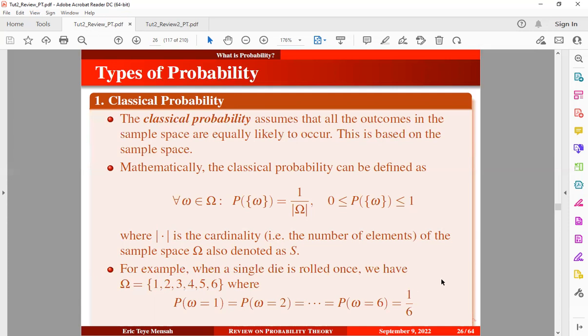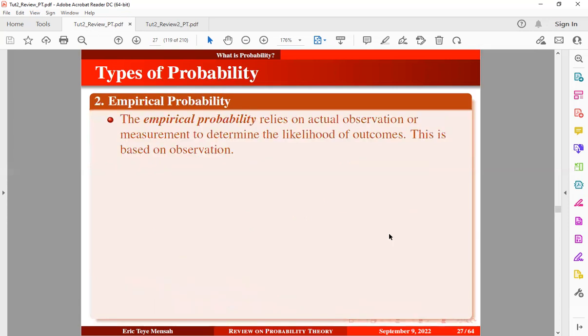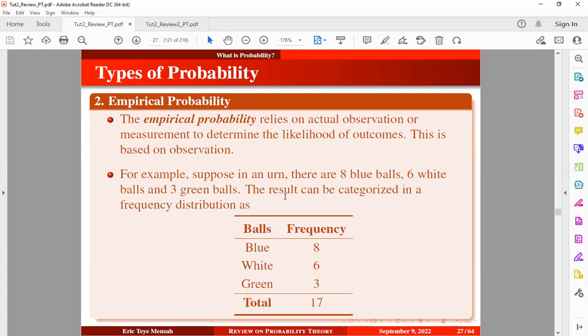Now let's take a look at the second type of probability known as the empirical probability. Empirical probability relies on actual observation or measurement to determine the likelihood of outcomes, and this is based on observation. For example, suppose in an urn there are eight blue balls, six white balls, and three green balls. The results can be categorized in a frequency distribution as shown below. We have eight blue balls, six white and three green balls, so in total we have 17 balls.